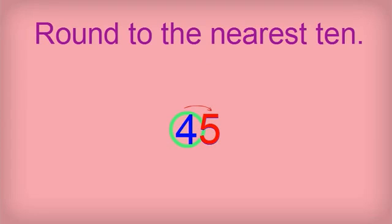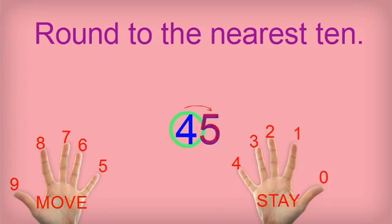My neighbor this time is a 5. Is he on the hand that tells me to move or is he on the hand that tells me to stay? 5 is on the hand that tells me to move. He is so annoying that I have to move away. I'm just going to move up one block from 4 to 5. My new neighbor on 5th street is a 0.